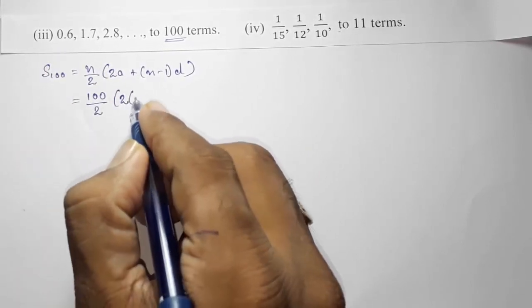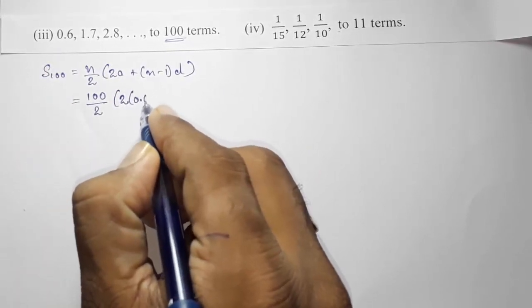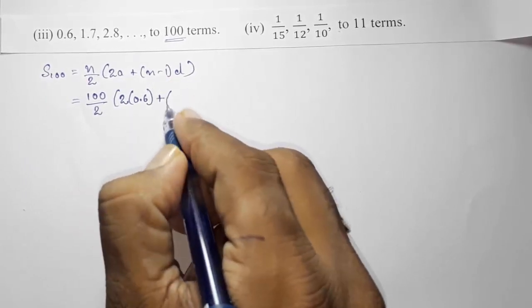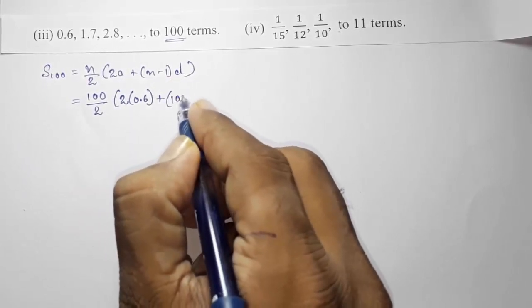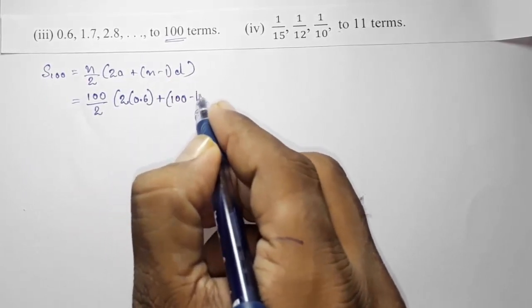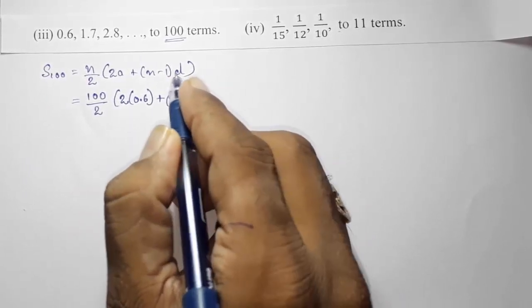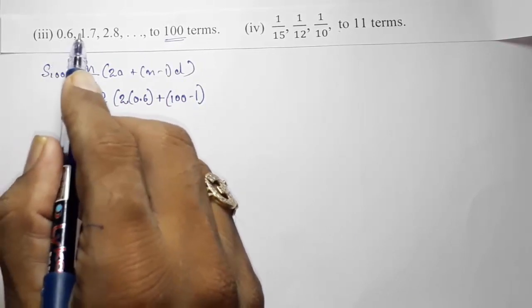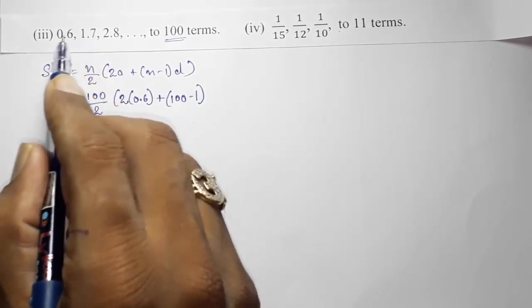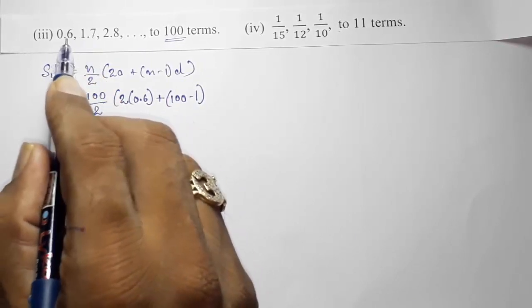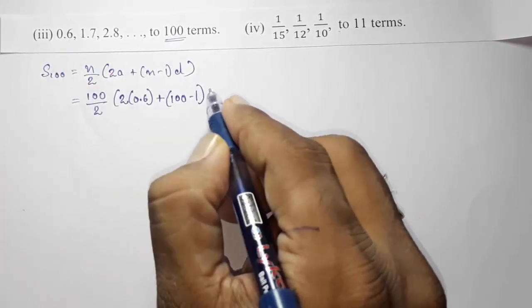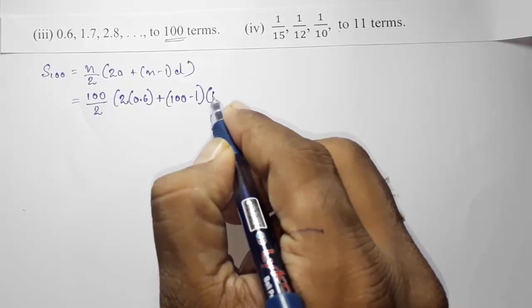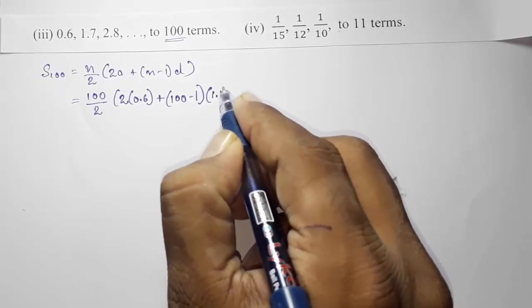The first term a = 0.6, and n−1 = 99. The common difference: 1.7 − 0.6 = 1.1, so d = 1.1.